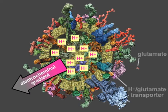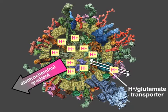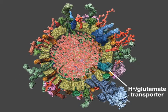Through a transporter in the membrane, protons flow down their concentration gradient to the outside of the vesicle as glutamate enters by an antiport mechanism. In this way, a vesicle is loaded with thousands of glutamate molecules.